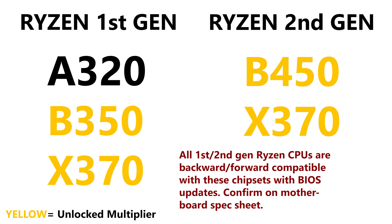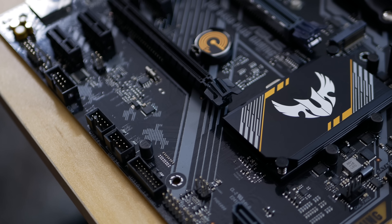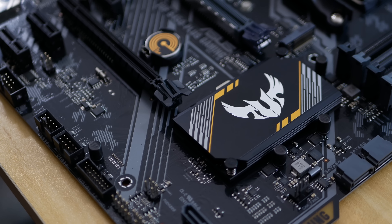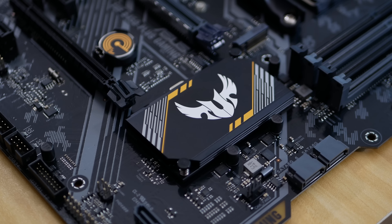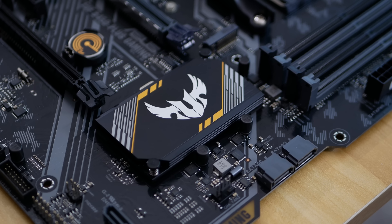X370 and X470 chipsets are the most expensive and feature-packed by comparison, so you'll often see added compatibility for Crossfire and SLI, a more advanced onboard audio system, and additional storage drive support. You'll also typically see additional PCIe lanes, meaning you can connect more drives and other things to your motherboard without cutting into lanes that other hardware might already be using. In short, the cheaper the board, the more features stripped away to save costs. B and X series chipsets in AMD's case support overclocking.